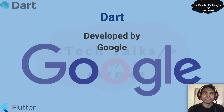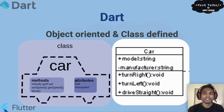After lots of experiments, the Google team found Dart to be faster, smoother, and pretty efficient to be used for developing applications, including client-side and also server-side applications. It was developed by Google. Dart is an object-oriented language, so we can create classes and objects, use inheritance, encapsulation, abstractions, and polymorphism.